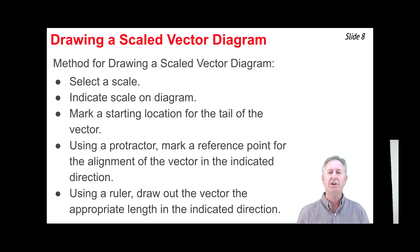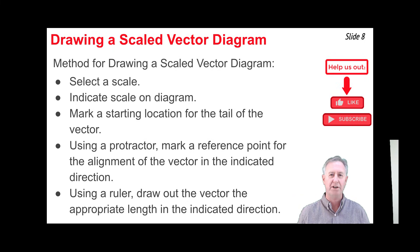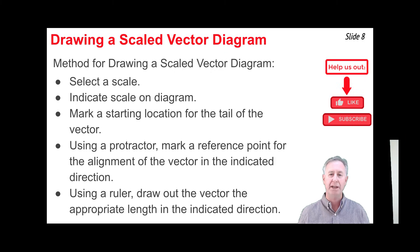We just saw how to use a scaled vector diagram to determine the magnitude and direction of a vector. Now we're going to learn how to draw a scaled vector diagram given the magnitude and direction of a vector. There are five simple steps. The first step is to select a scale — choose one big enough that the vector is visible, but not so big that it extends beyond the allotted space.